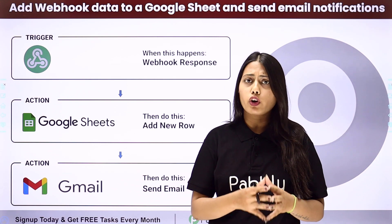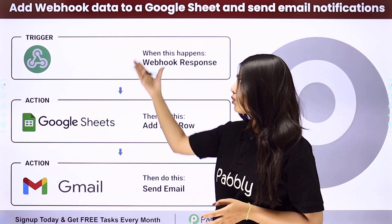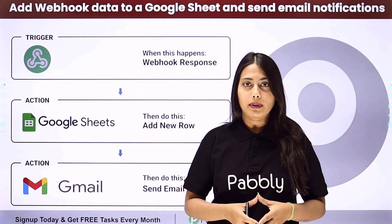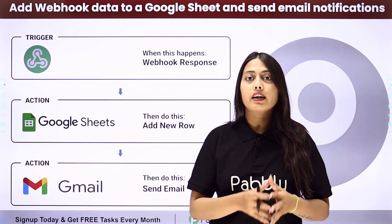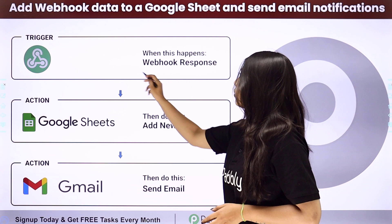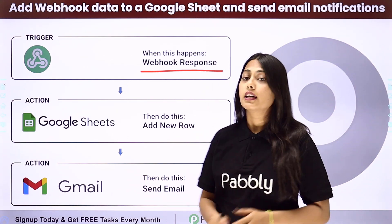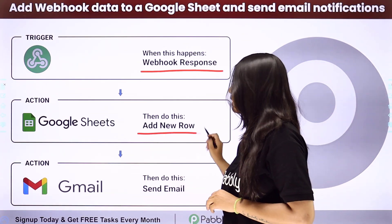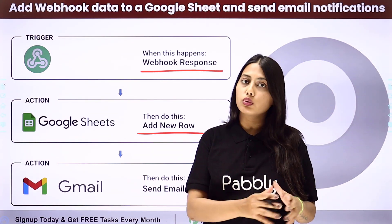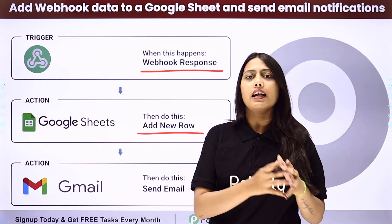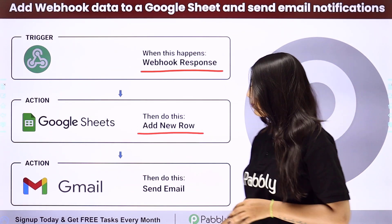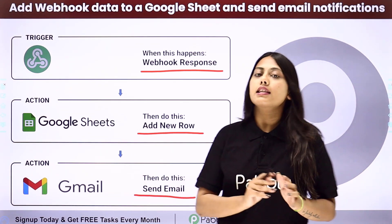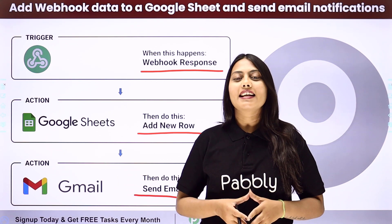We can create an automation for this whole process with the help of Pably Connect, where our trigger will be the webhook response. Our first action step is going to be adding a new row in Google Sheets, and our second and final action step is going to be sending an email via Gmail.